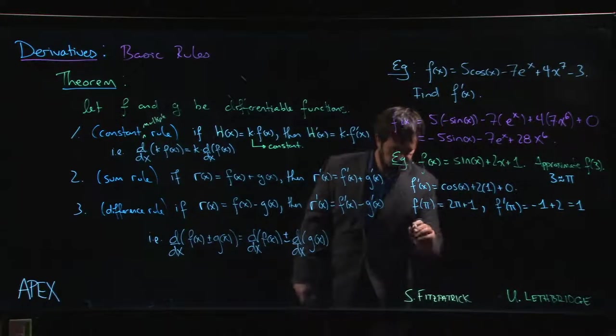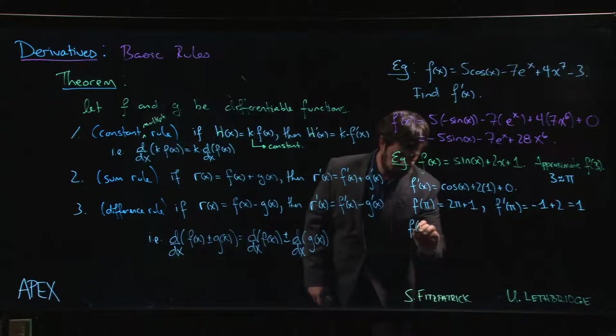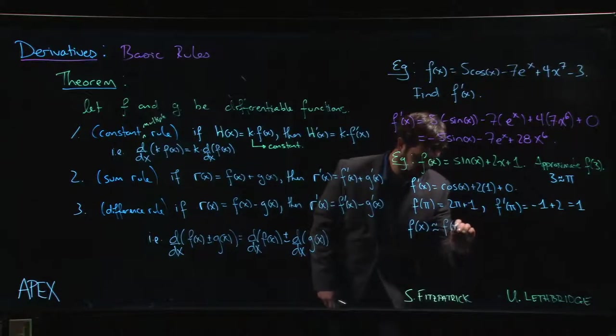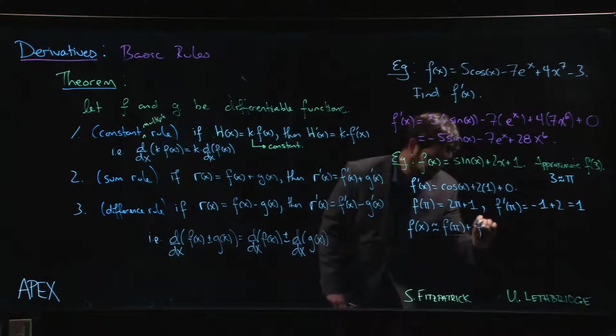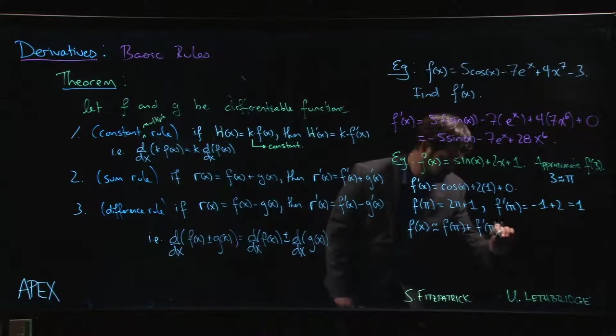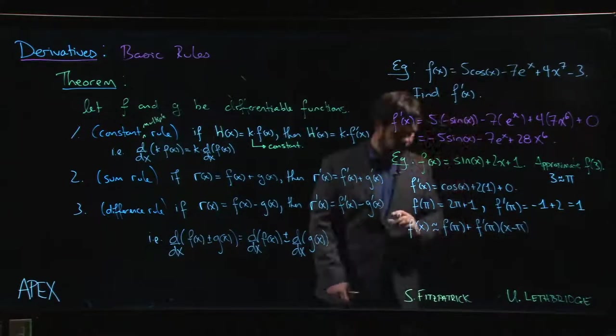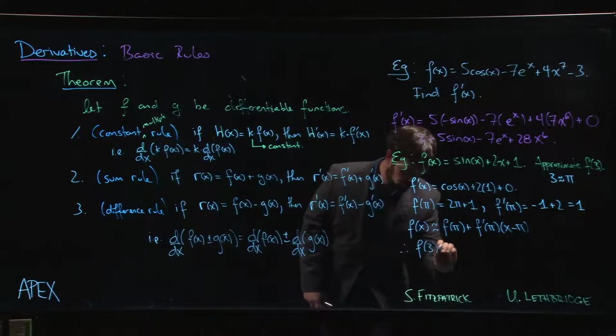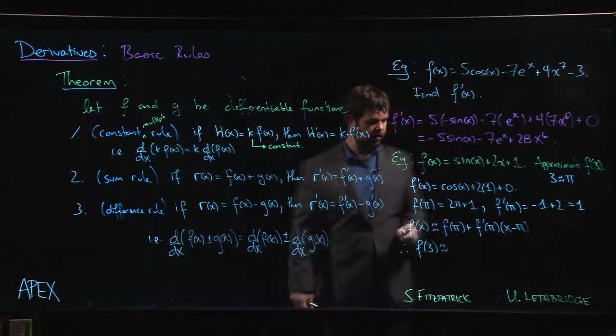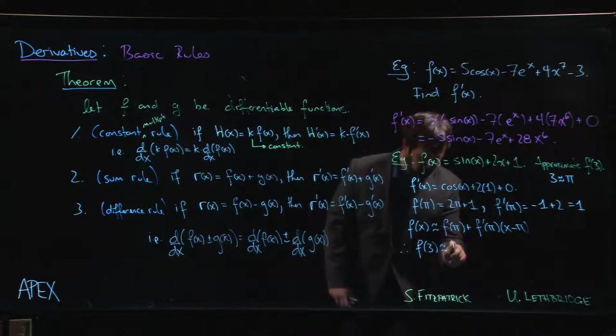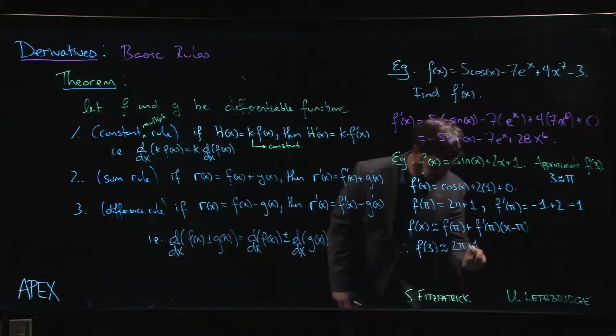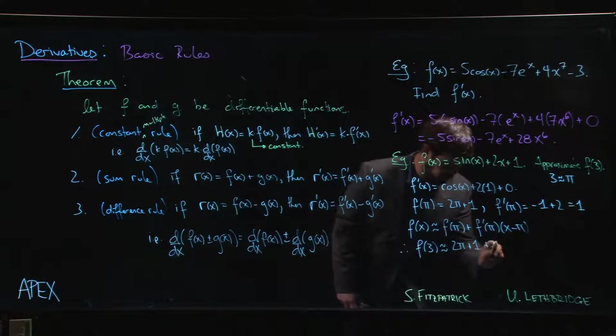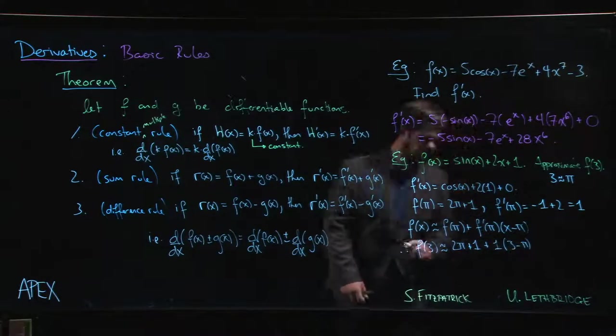Okay, so if we use a tangent line approximation, what we get is that f of x will be approximately f of pi plus f prime of pi times x minus pi. That's the general formula. So that means that f of three should be approximately f of pi, so two pi plus one, f prime is just one, times three minus pi.